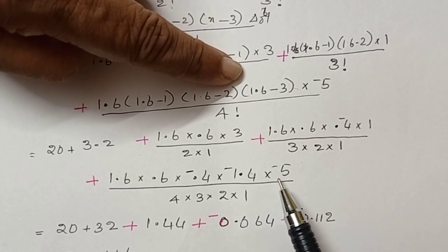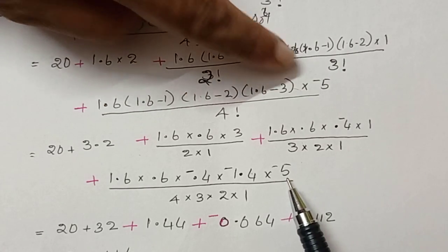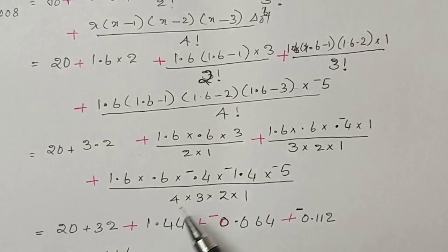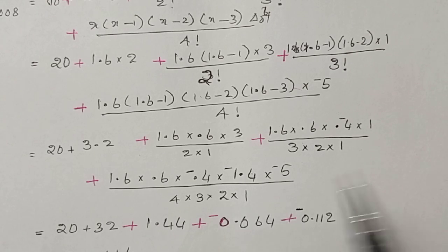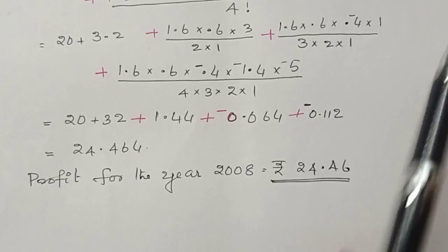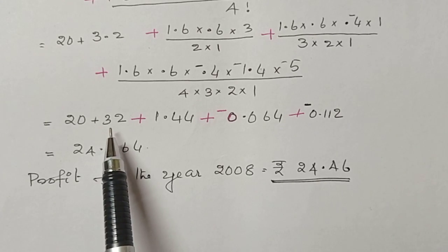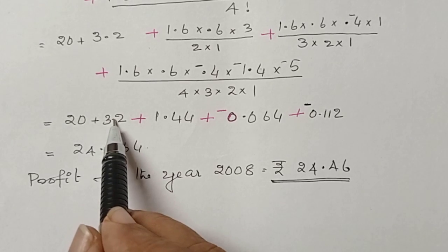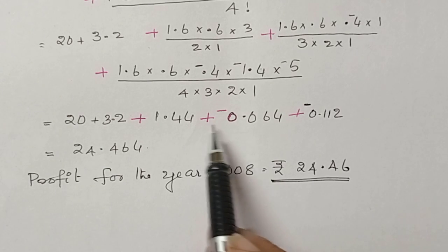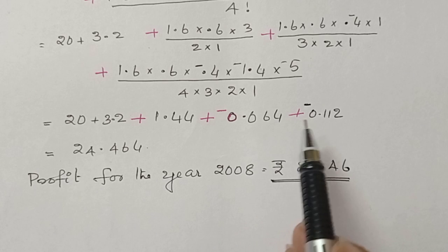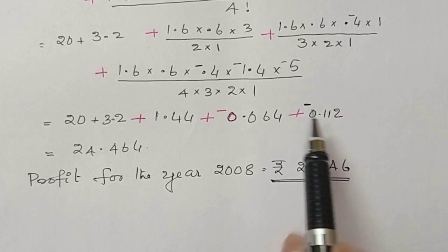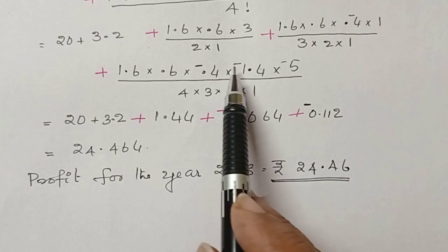Plus 1.6 into 0.6 into minus 0.4 into minus 1.4 into minus 5 divided by 4 factorial, 4 into 3 into 2 into 1. Again solving, 20 plus 3.2 plus 1.44 plus 0.64 plus 0.12.